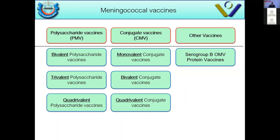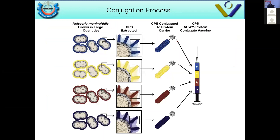Switching to meningococcal vaccines: they can be grouped into three main categories — polysaccharide vaccines, conjugate vaccines, or other vaccines. Polysaccharide vaccines are made of the polysaccharide capsule of Neisseria meningitidis, whether serogroup A, C, W, or Y.